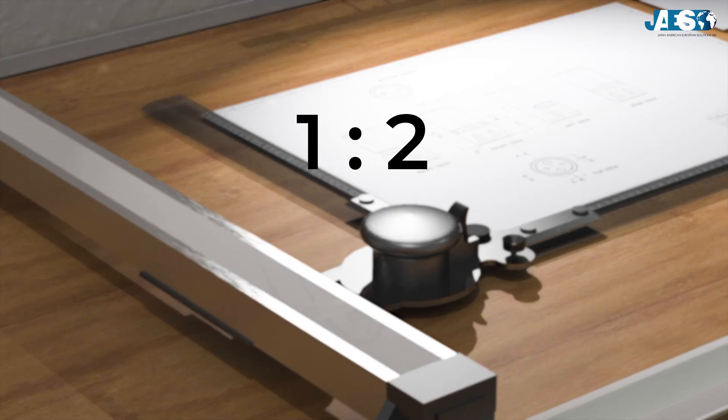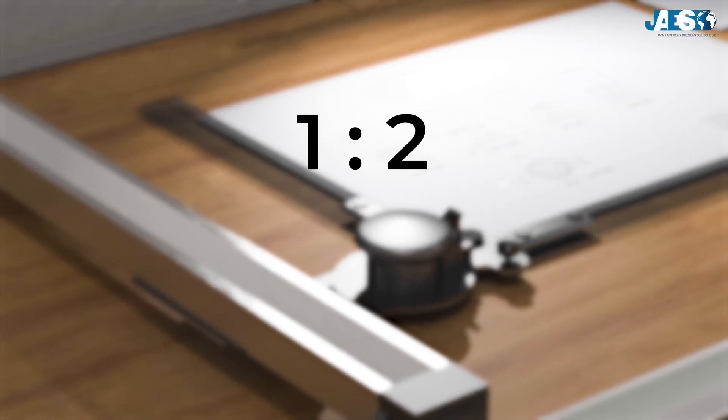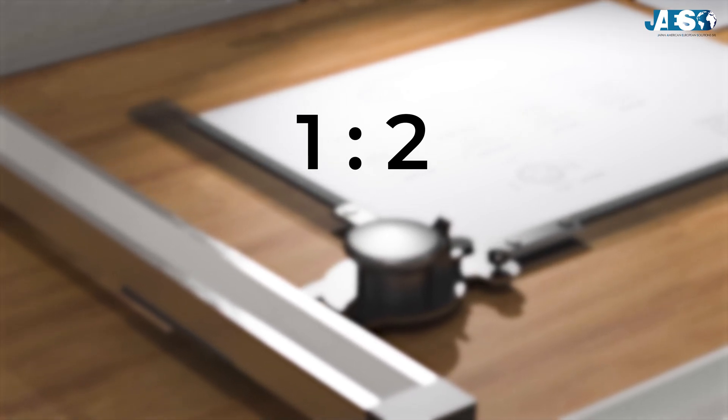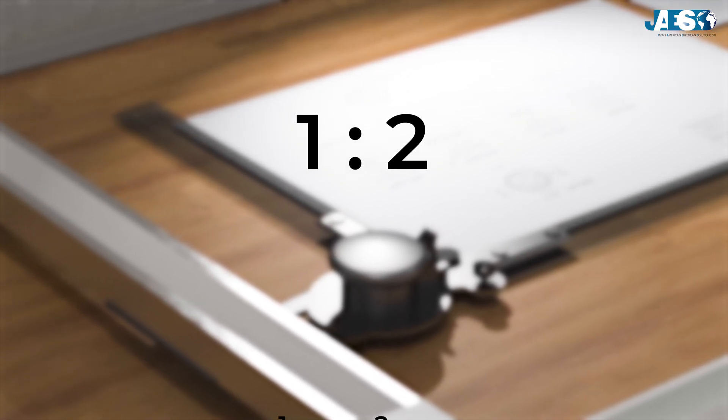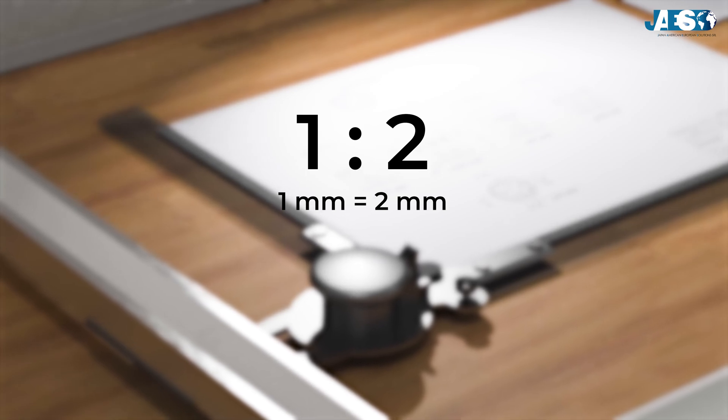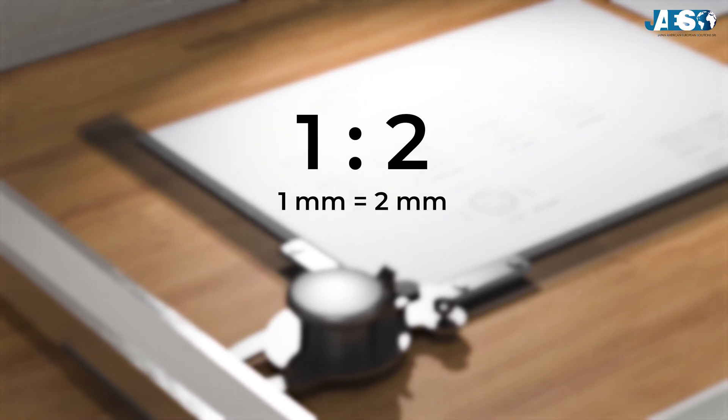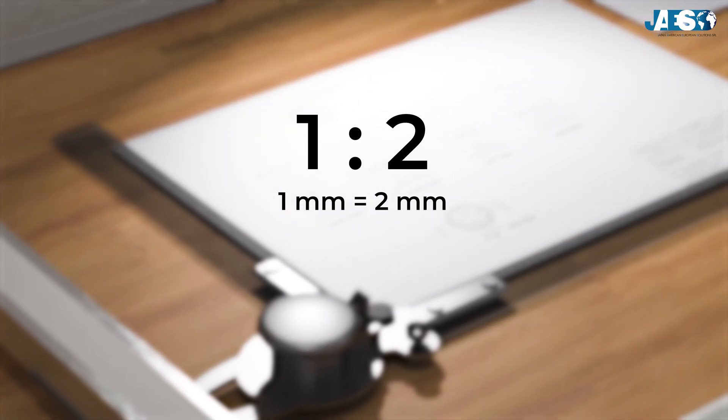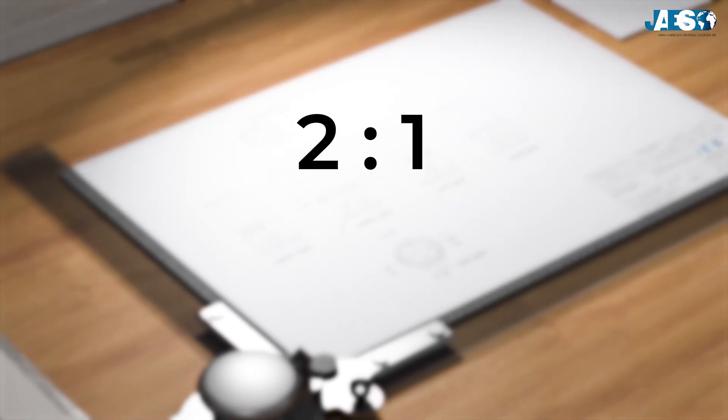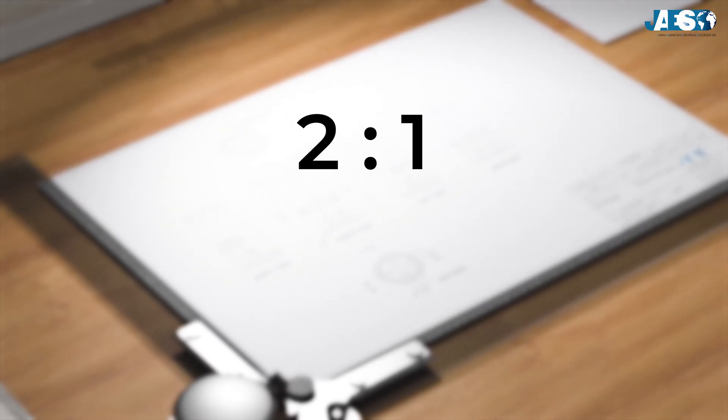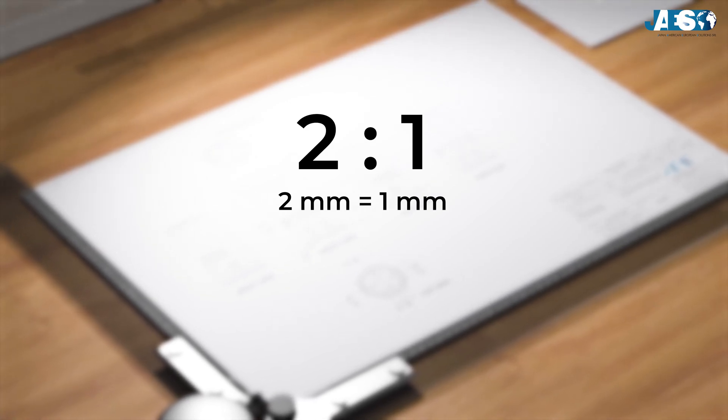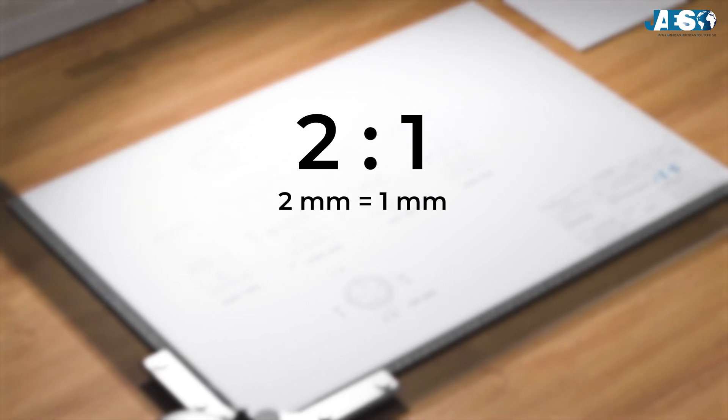While if it is written, for example, scale one to two, it means that the object is drawn reduced by half of the real size. In practice, the dimensions we measure will have to be multiplied by two to understand how big it really is. On the other hand, if it is written two to one, we are dealing with an enlargement. The object would be drawn twice as large as it really is, so we have to divide the measured measurements by two.